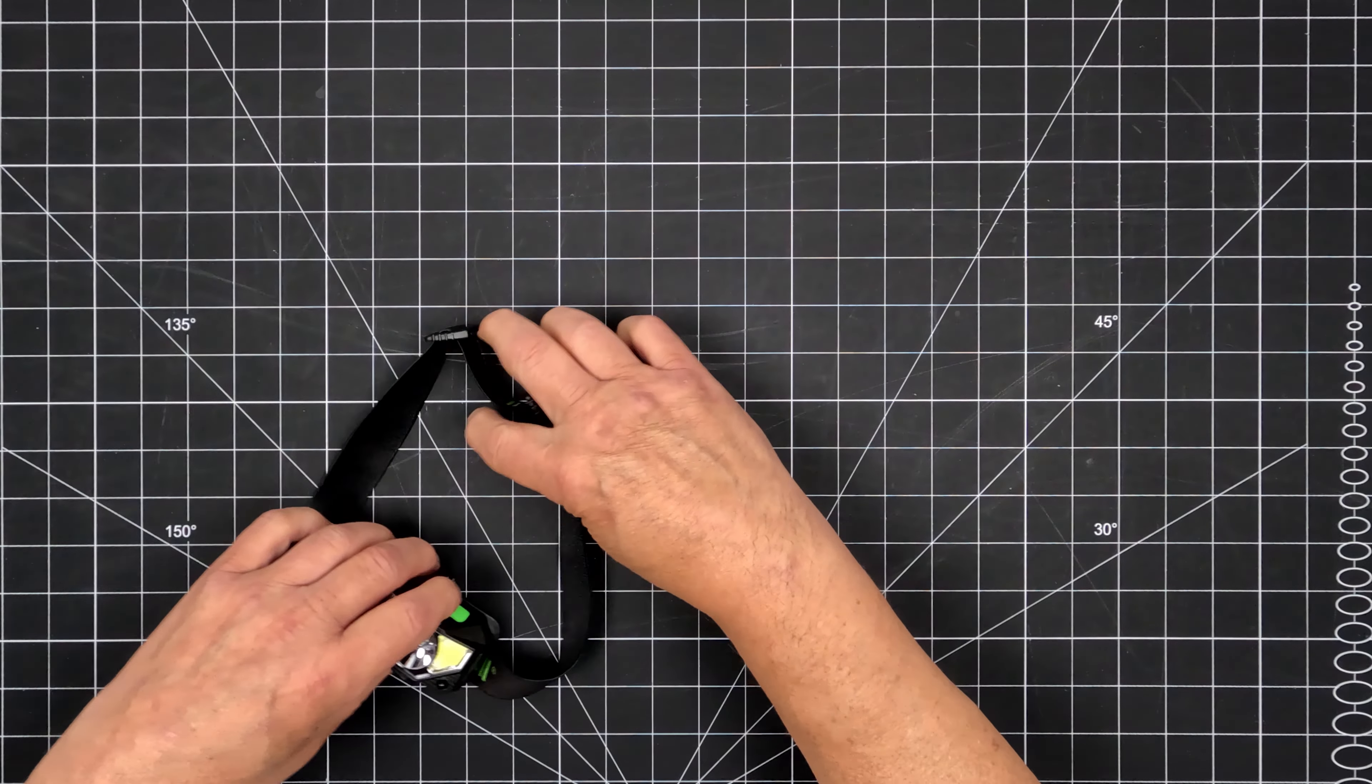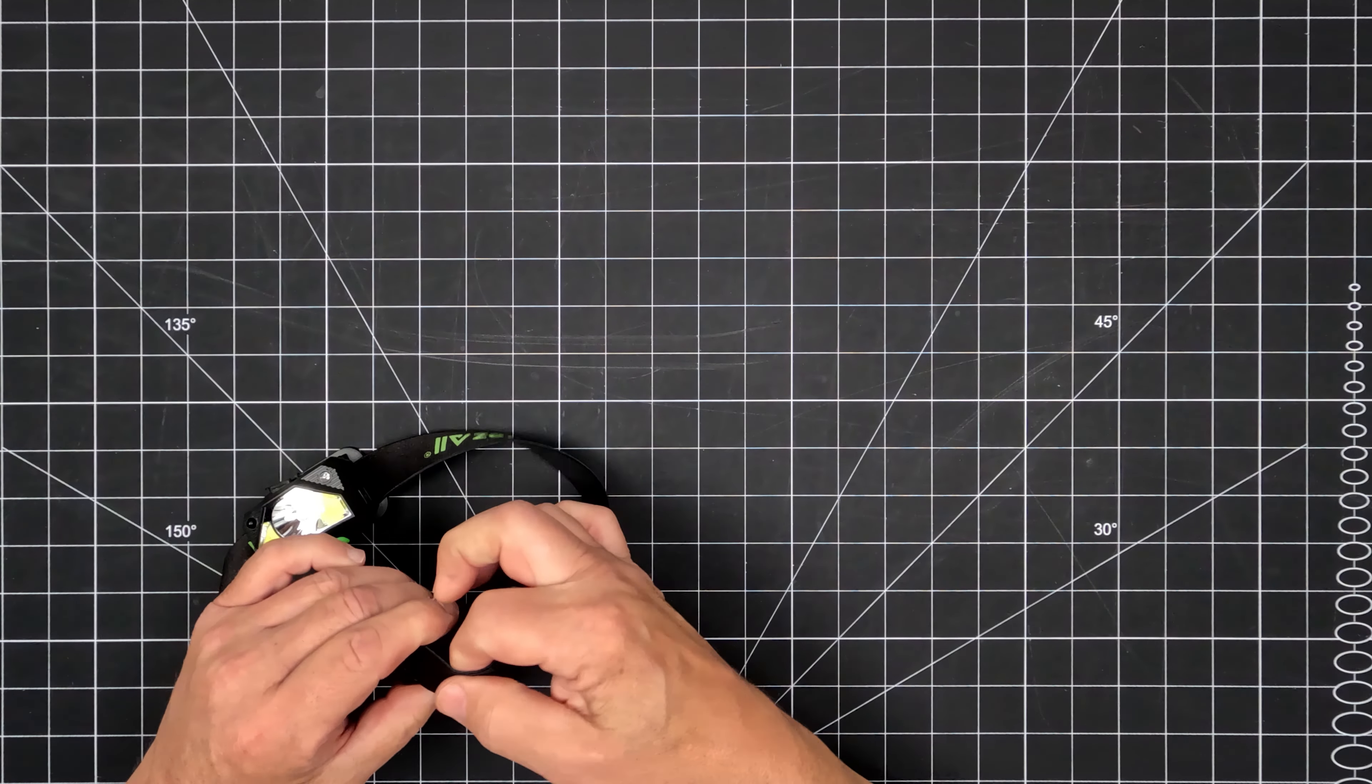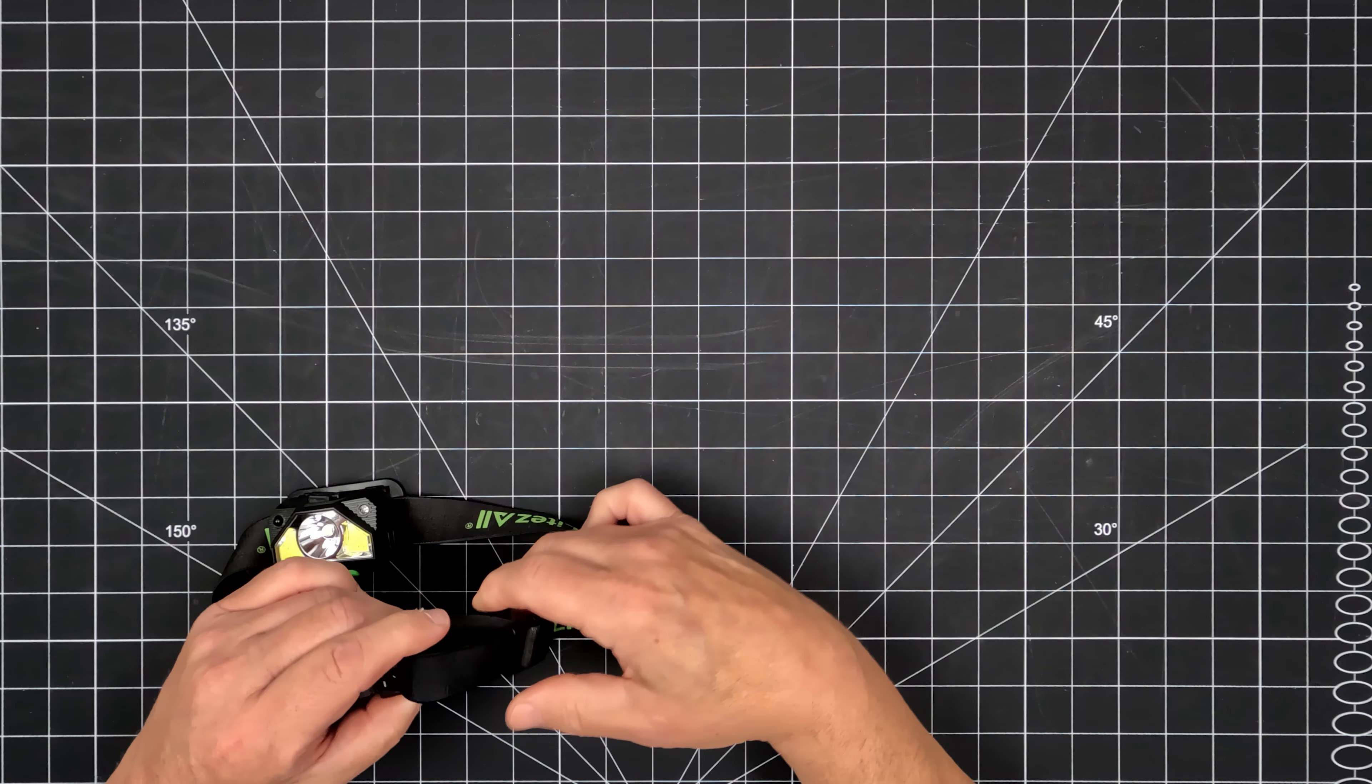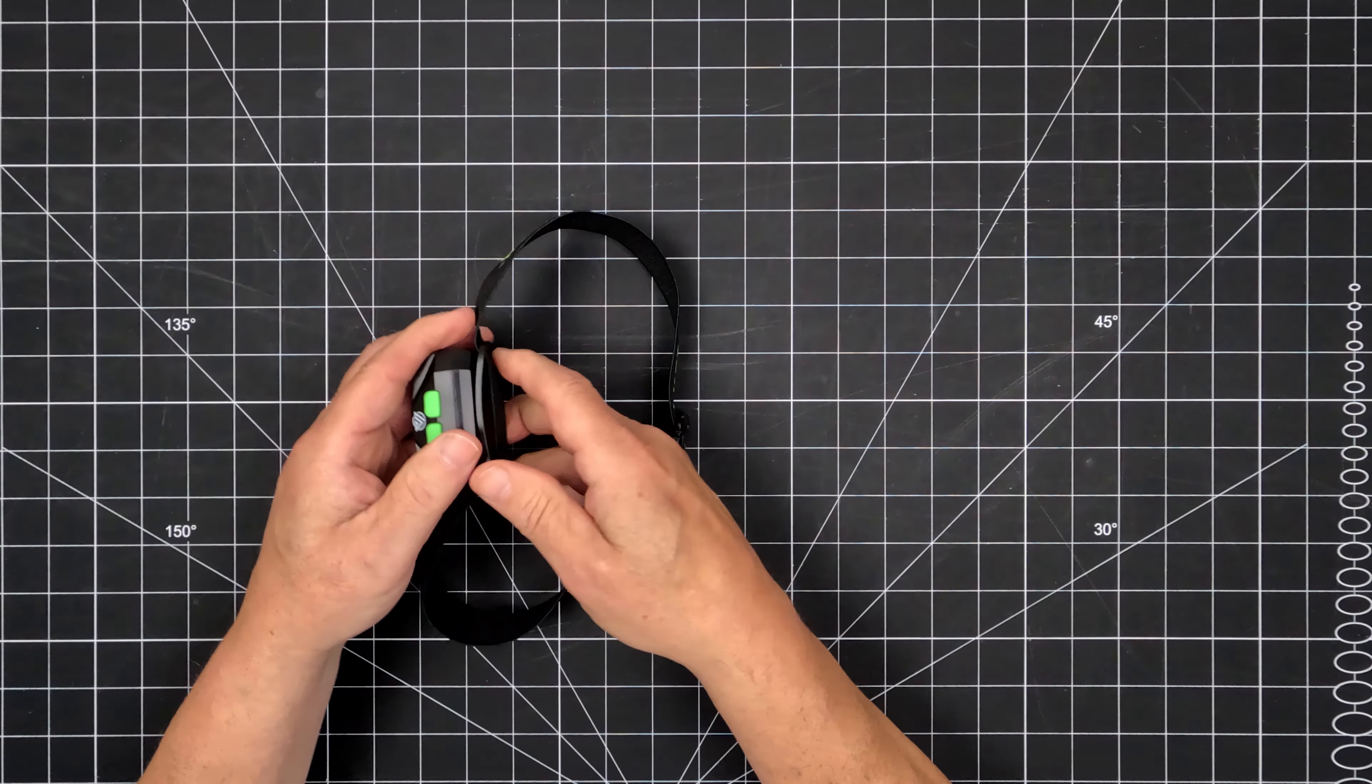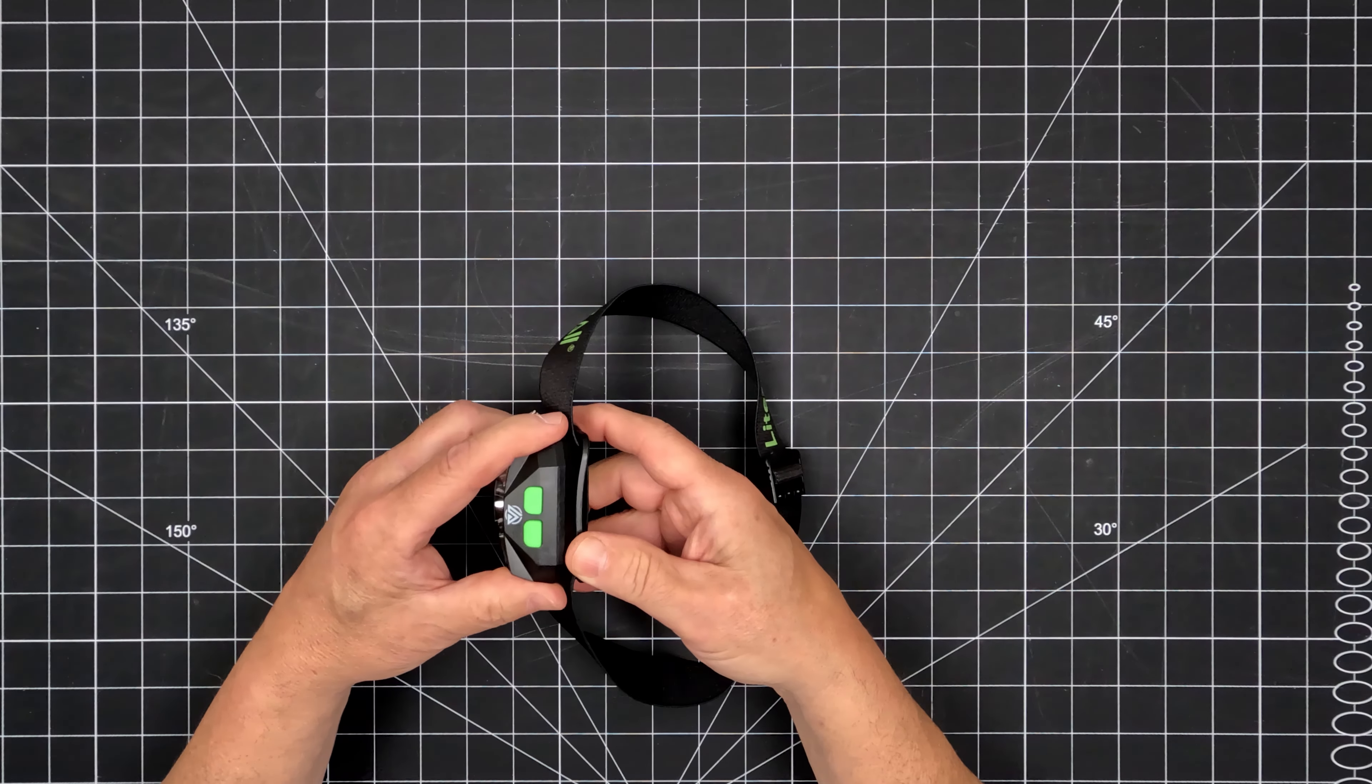Adjust the headband as needed. It fits most head sizes and accommodates hoodies and hard hats. Once installed, you may tilt the swipe downward up to 120 degrees in two locking positions to aim light.